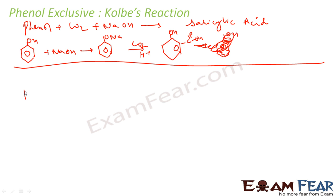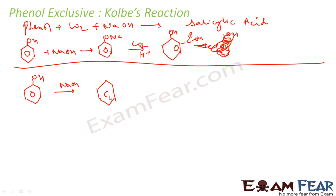Let's see the mechanism. In this mechanism, we start with the OH group on phenol. When we react with NaOH, we get O-Na — a reaction we have seen before. O-Na is essentially O⁻ Na⁺, and this will go for a rearrangement.